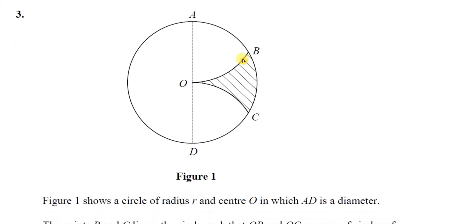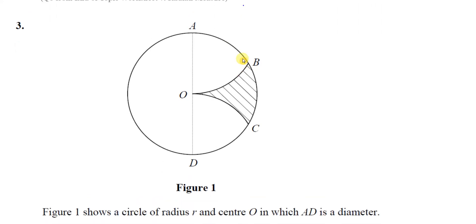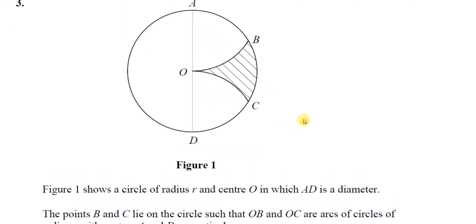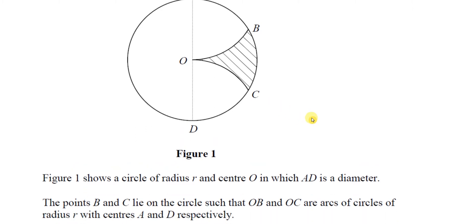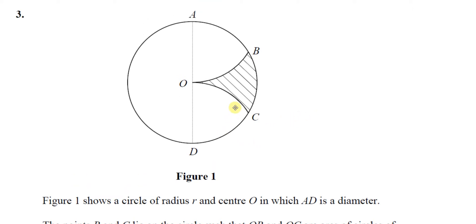This question shows a circle of radius R, with center O, in which AD is the diameter. The points B and C lie on the circle such that OB and OC are arcs of circles of radius R, with centers A and D respectively.